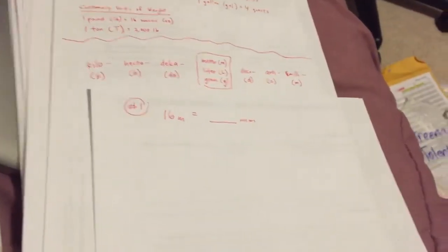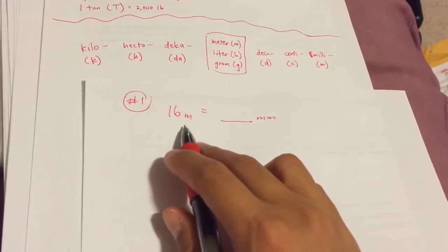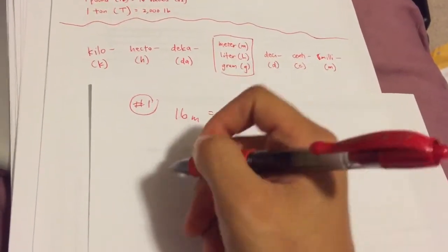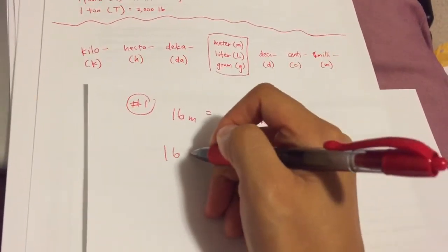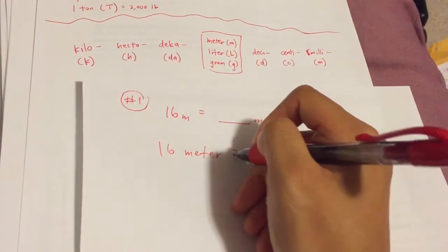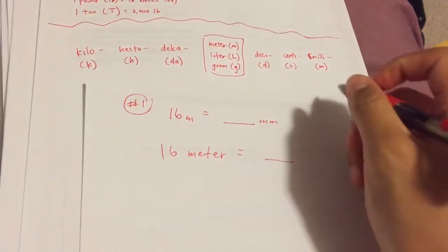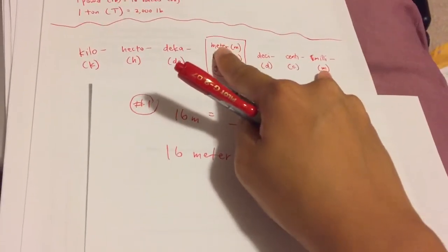The first step I want you to do is to rewrite underneath it what the M stands for. 16M stands for 16 meters, because there's no prefix to it, equals blank MM, which is going to stand for millimeters.